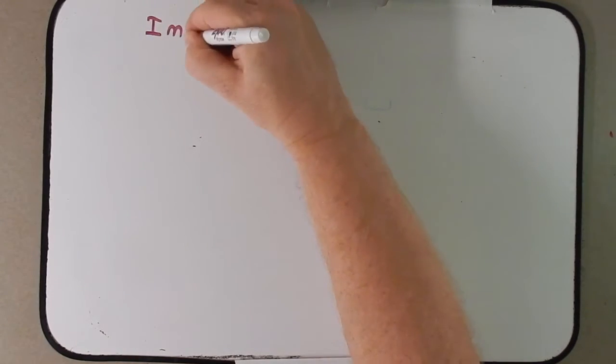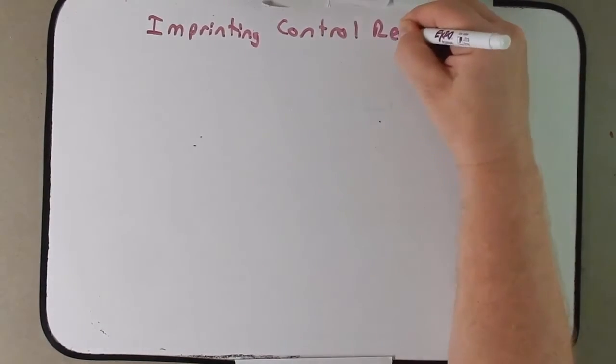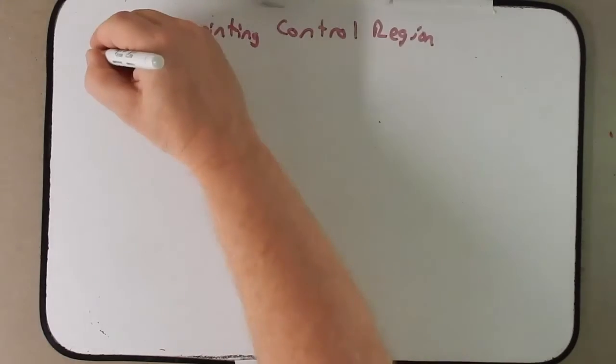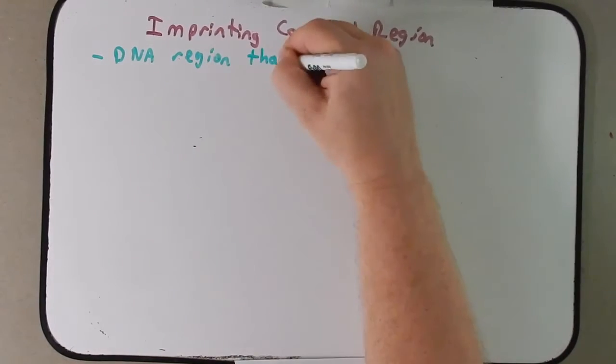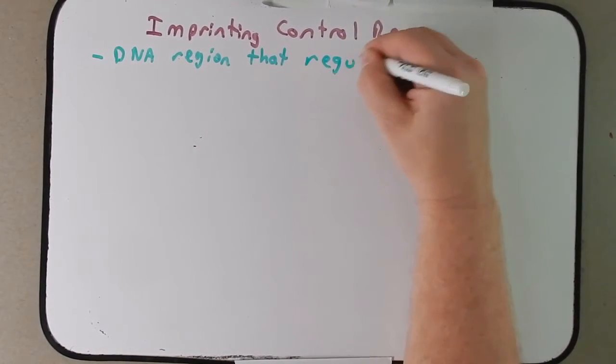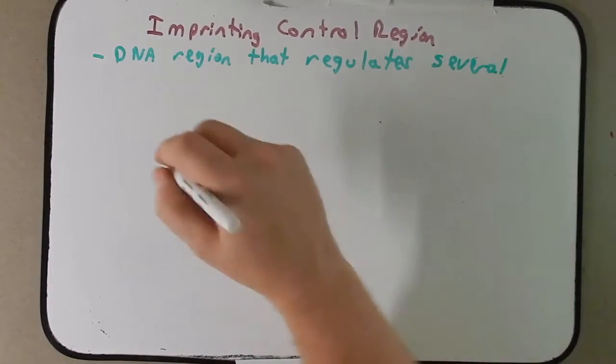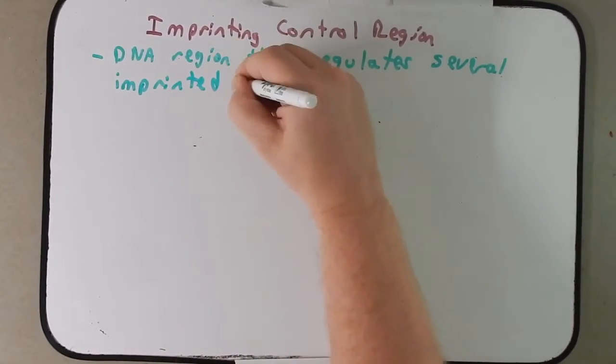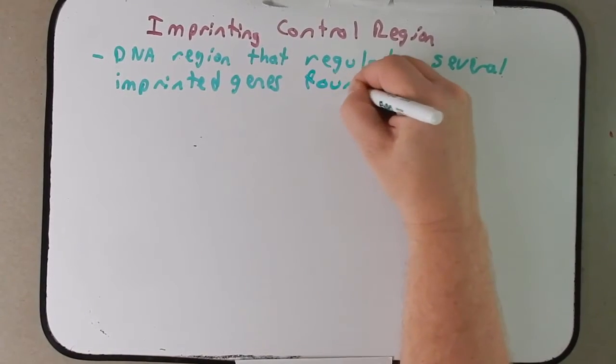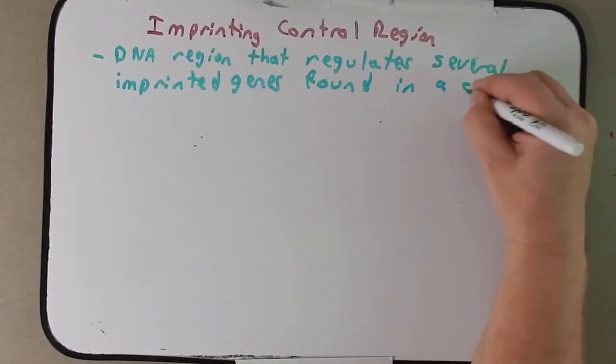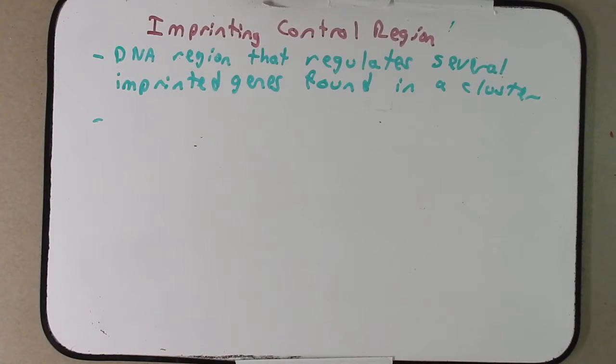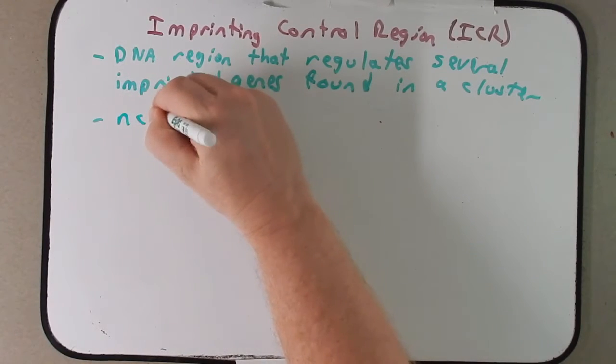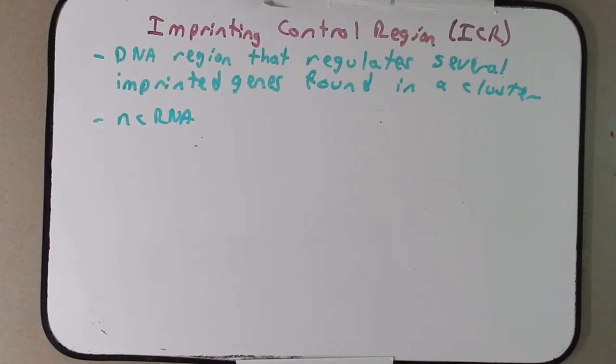So what is this imprinting control region? The definition of the imprinting control region is that it's a DNA region that somehow regulates several imprinted genes found in a cluster. This imprinting control region, which we'll just refer to as ICR, is that non-coding RNA, just like we saw on the last whiteboard where that non-coding RNA regulated the expression of certain genes.